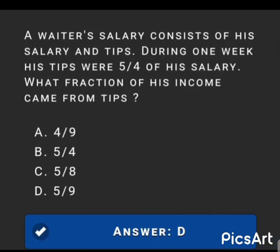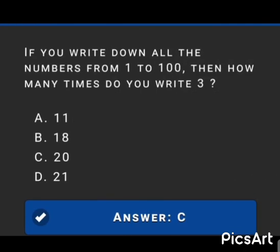Next MCQ: A waiter's income consists of his salary and tips. During one week his tips were 5/4 of his salary. What fraction of his total income came from tips? The answer is option D: 5 over 9.